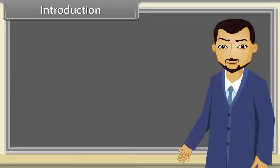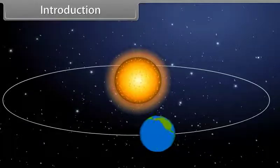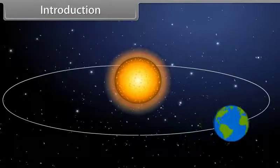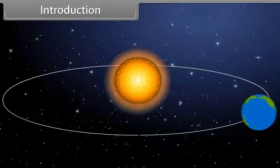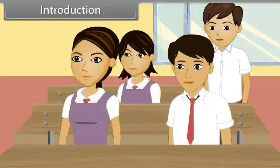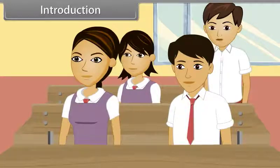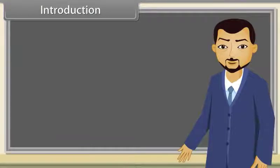Do you know what kind of path earth follows while revolving around the sun? It is elliptical in shape.